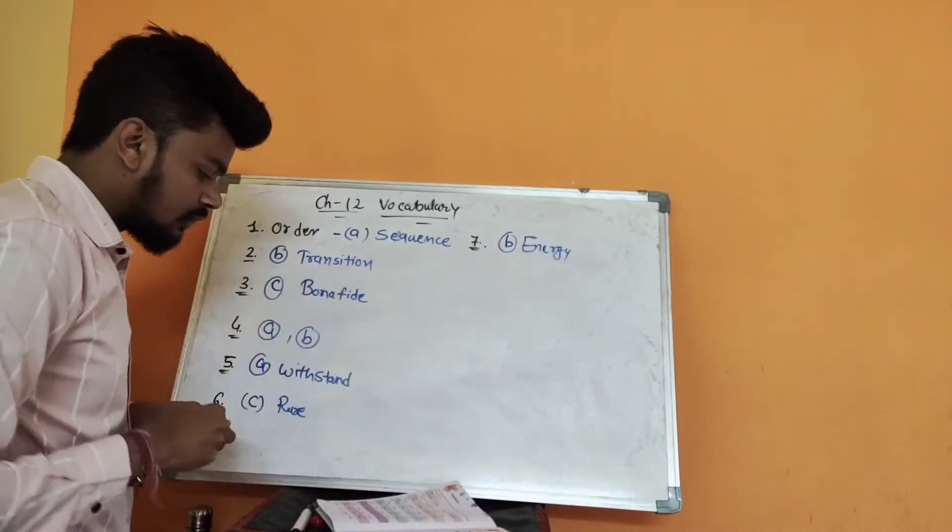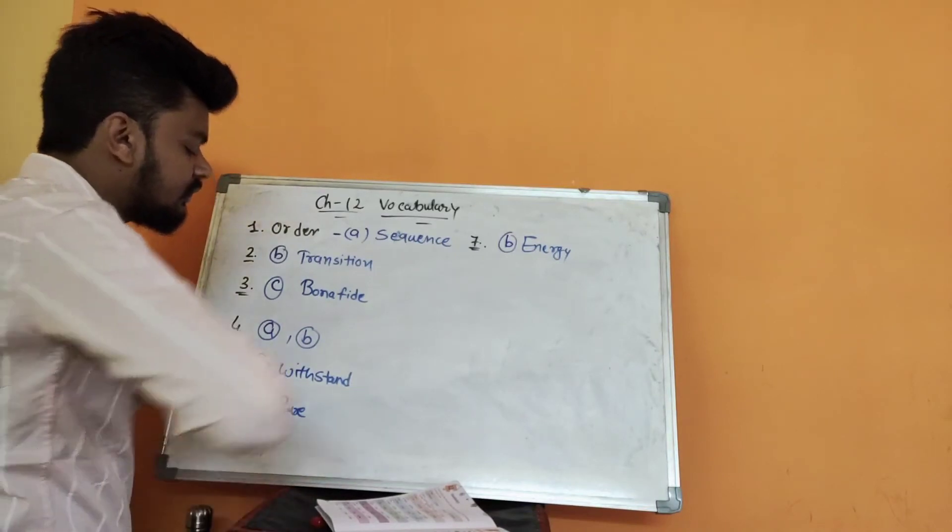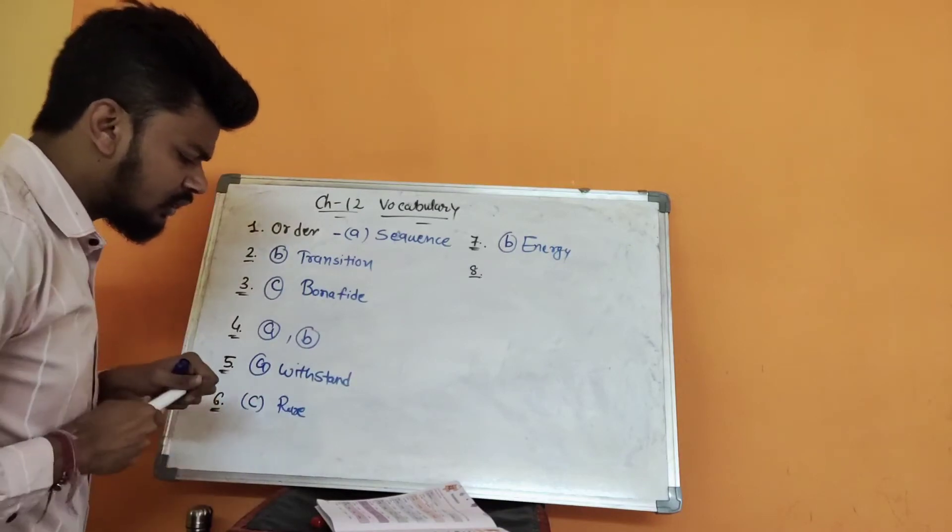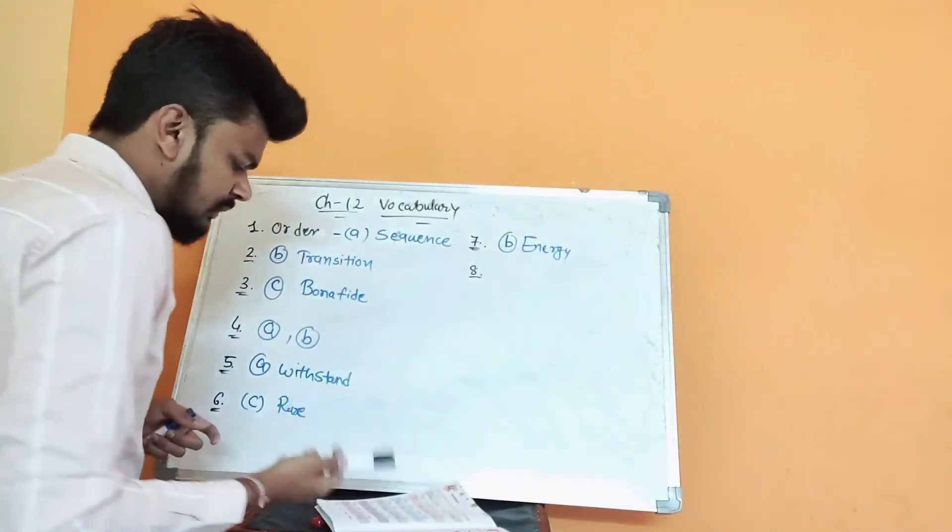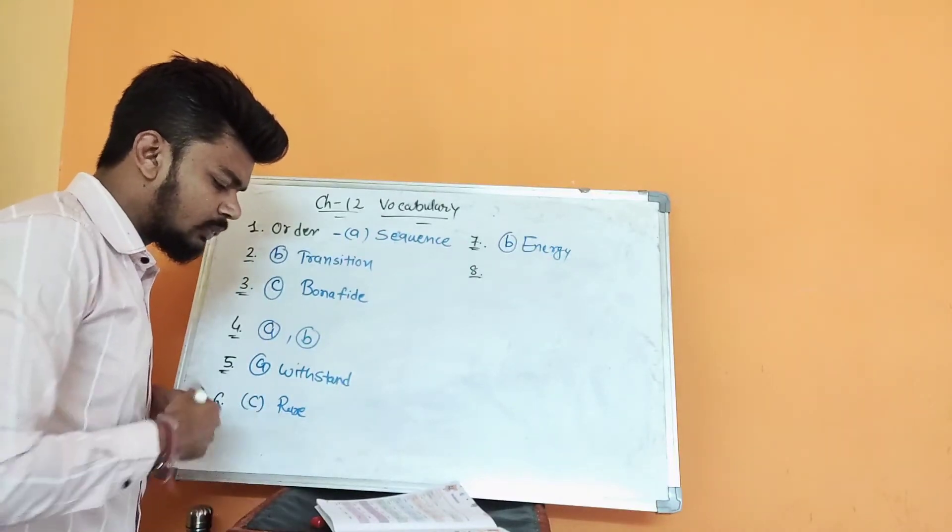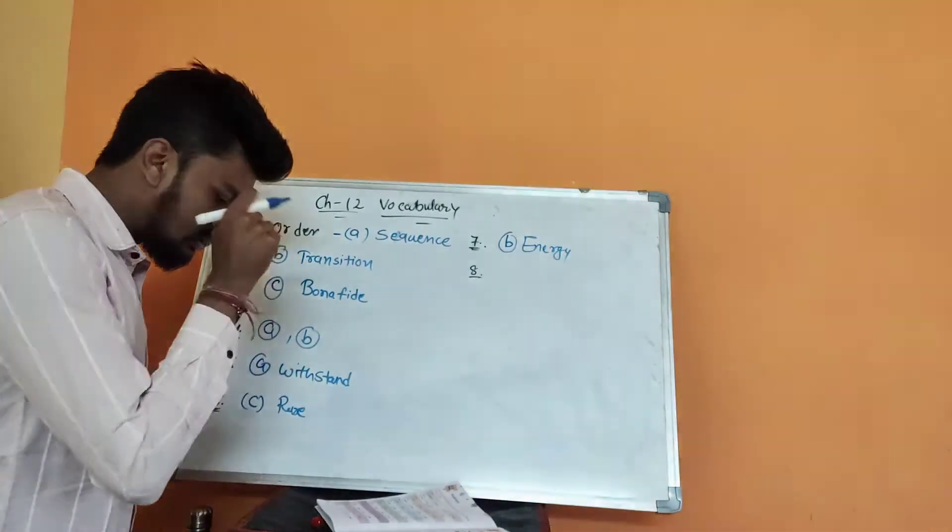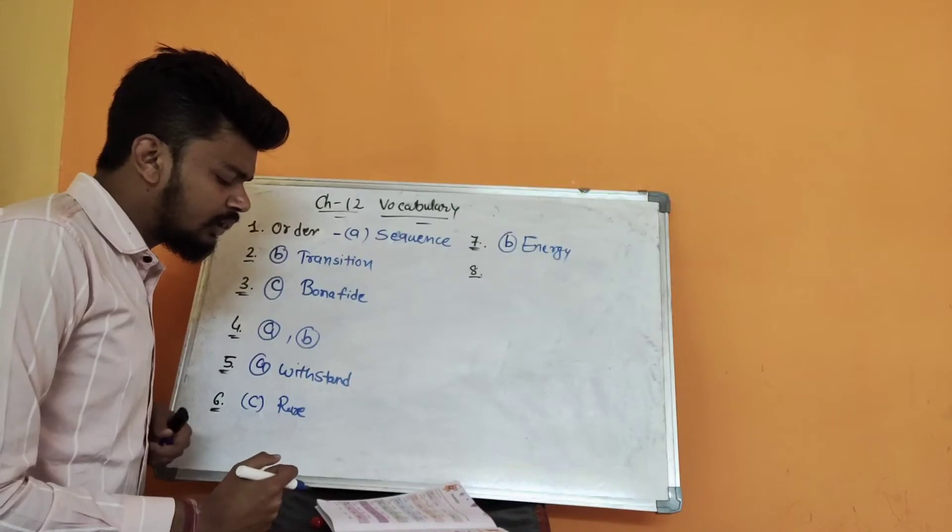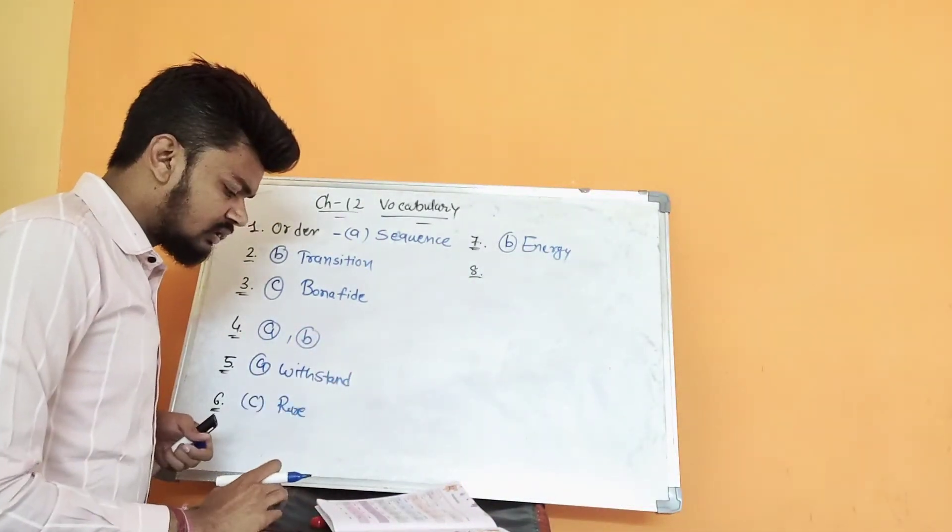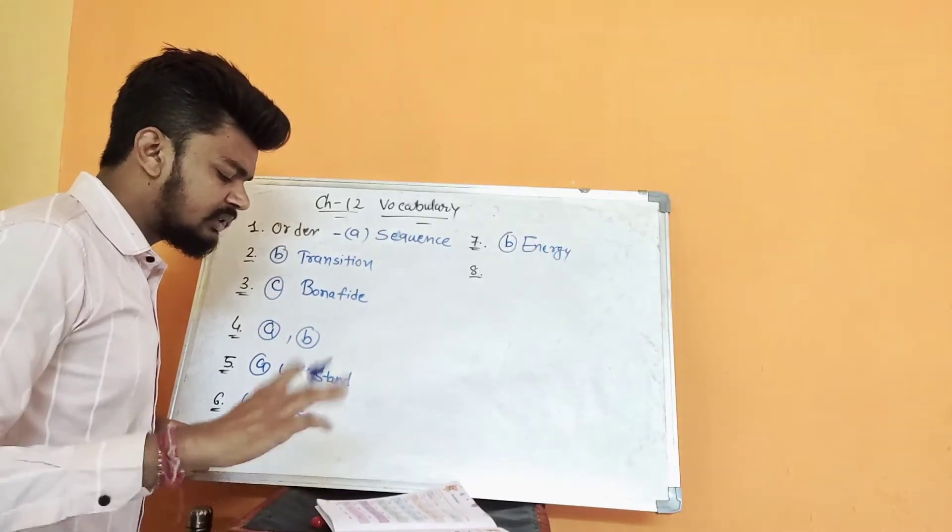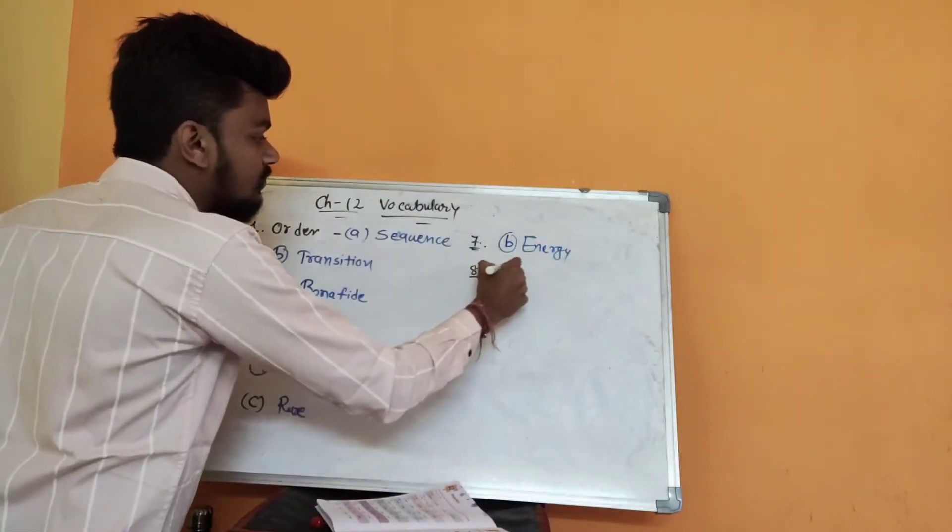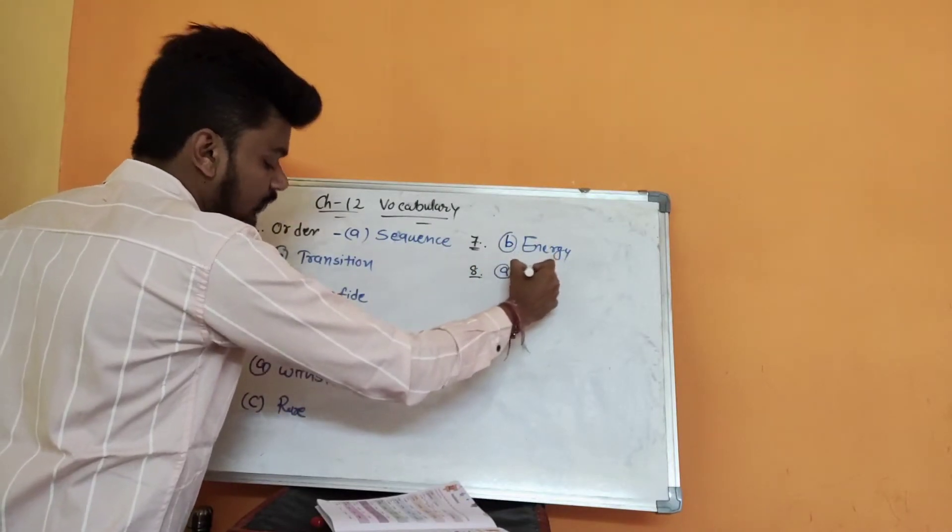Next, question number eight: ugly. Ugly means bad appearance. I guess there is no explanation needed, it's very direct. Option A is the proper one, which is horrible. Rough means not smooth, pleasant means nice, and rotten means decayed. The best appropriate answer is A, horrible.